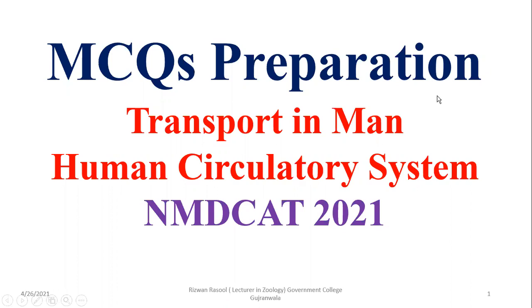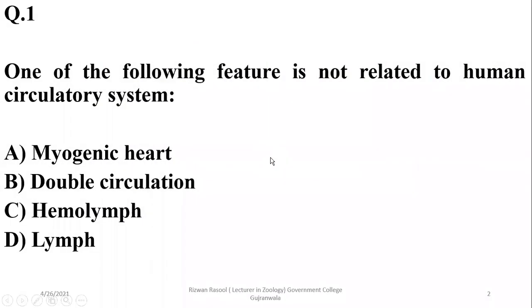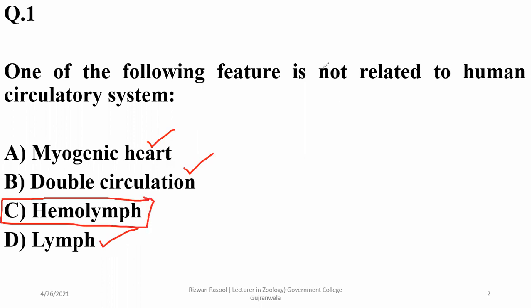In this video we're going to discuss some MCQs of the transport system in human beings, associated with the lymphatic system as well as the cardiovascular system. Question number one: which of the following features is not related to the human circulatory system? The human circulatory system has a myogenic heart and double circuit circulation, and is associated with the lymphatic system containing lymph. However, hemolymph is not associated with human circulation, so hemolymph is the right option.